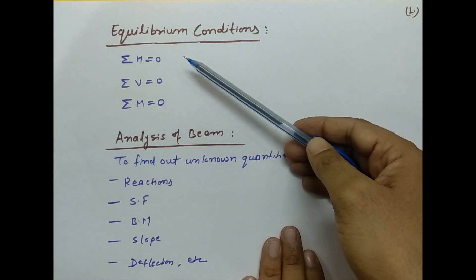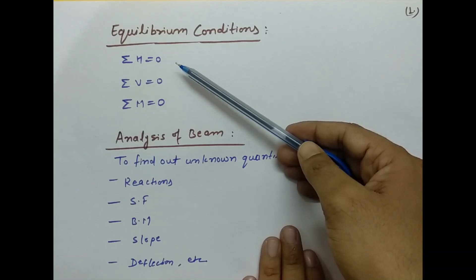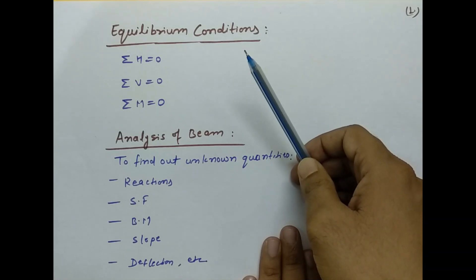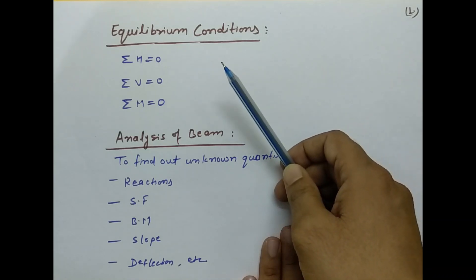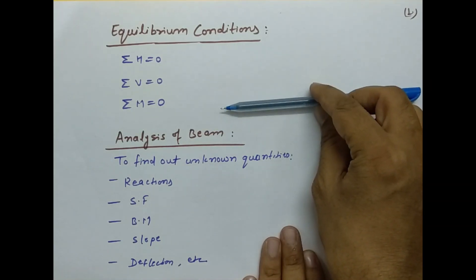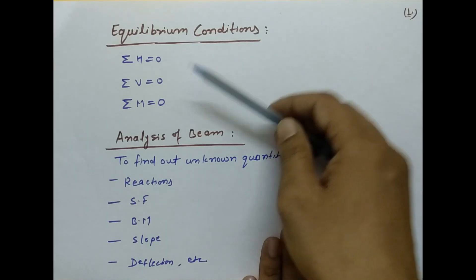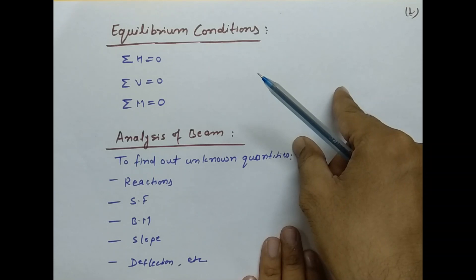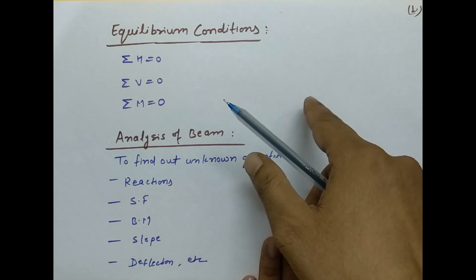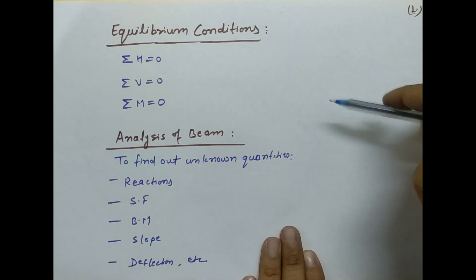Summation of H = 0 का मतलब है — किसी object में जो forces horizontal direction में act कर रहे हैं, उनका summation 0 है, यानि उनका net effect 0 है, तो उस object का horizontal direction में कोई movement नहीं होगा, वह equilibrium में रहेगा। उसी तरह summation of V = 0 का मतलब है कि vertical directions में जो forces हैं उनका summation 0 है, यानि vertical direction में कोई movement नहीं होगा।